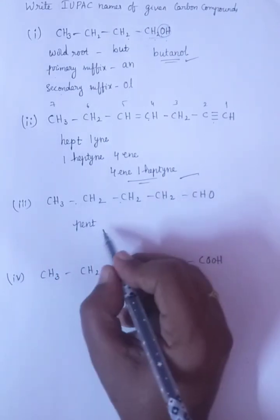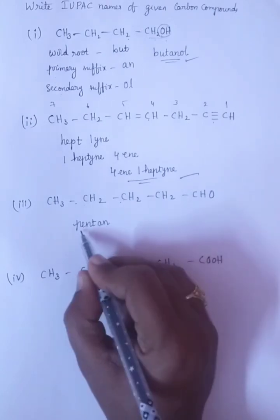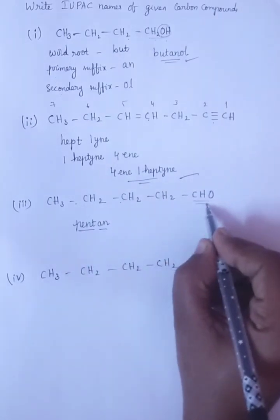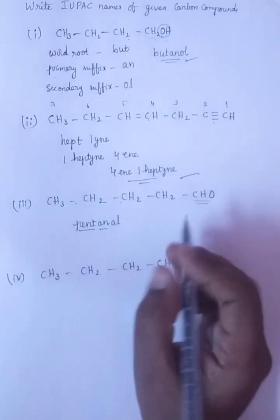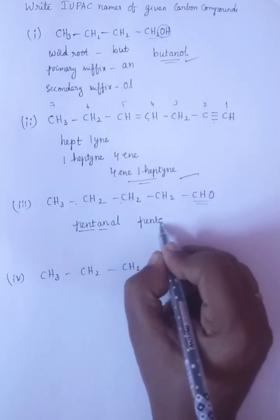Single bond is there. PENT. And this is aldehyde. That's why I will write it as AL. So the name will be pentanal.